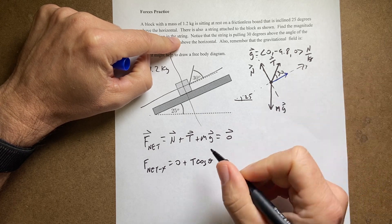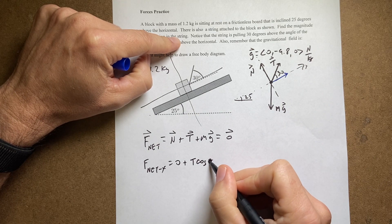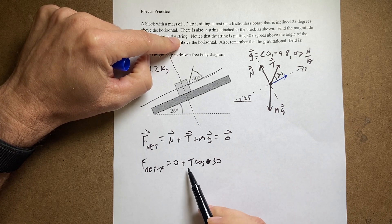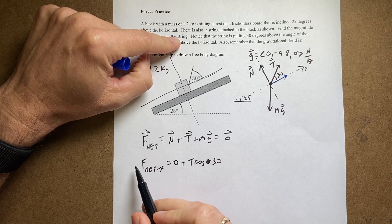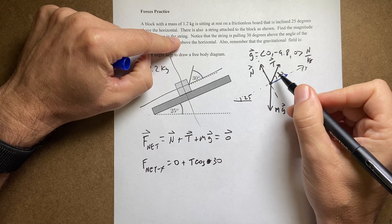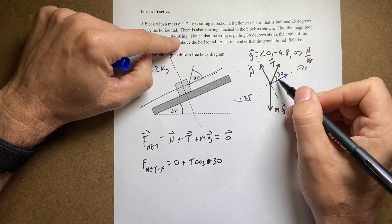Oh I guess you should call that 30. Now this is the scalar magnitude of the tension. It does not have a vector symbol over it. This whole thing is a scalar equation. What else is in the x direction?